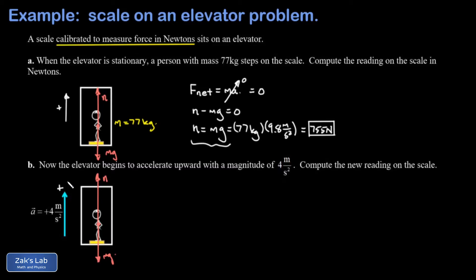I'm going to choose the same coordinate system, in other words up is positive, and I apply Newton's second law. So I'm analyzing the net force on the person and relating that to their acceleration. So F_net is going to be n minus mg, and that's going to be equal to m, the mass of the person, times their acceleration.